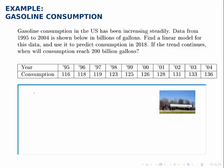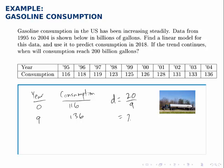Taking 1995 as our year zero, the consumption that year was 116 billion gallons, and in 2004, or year 9, the consumption was 136 billion gallons. So in nine years, consumption grew by 20 billion gallons. Our growth rate will be 20 divided by 9, or 2.22 repeating.